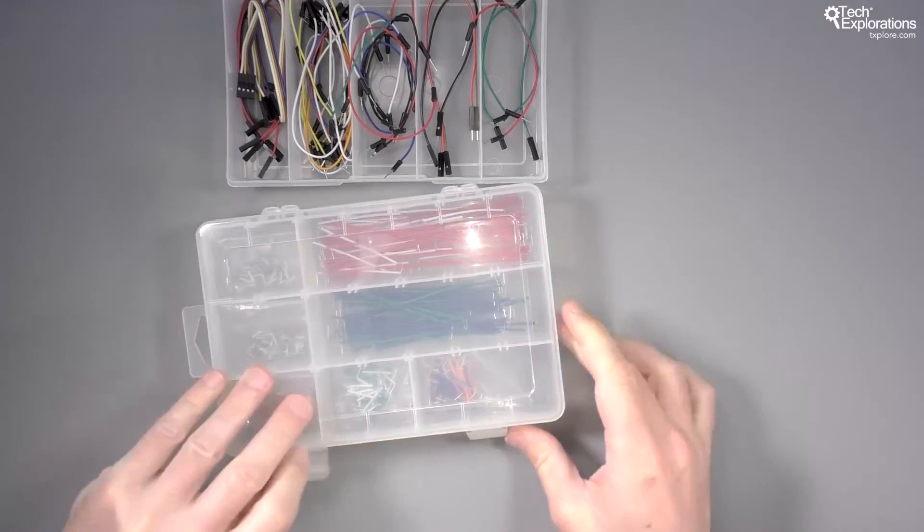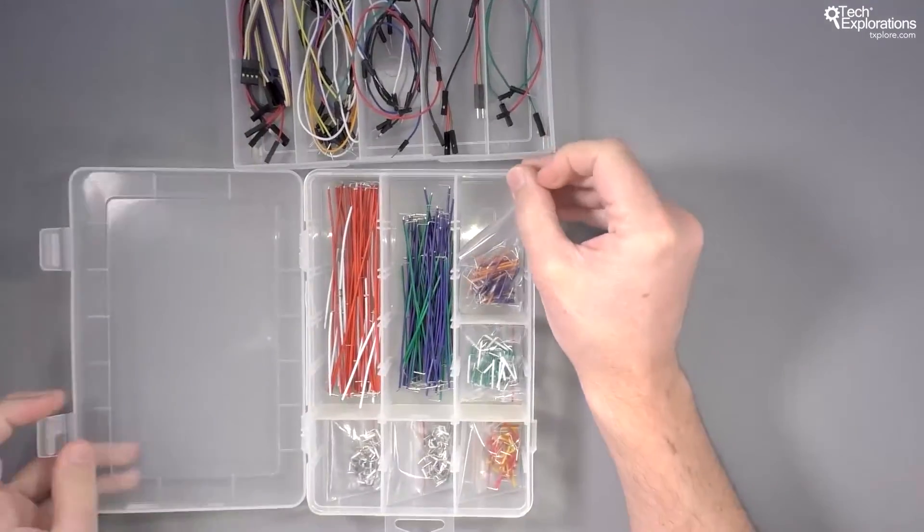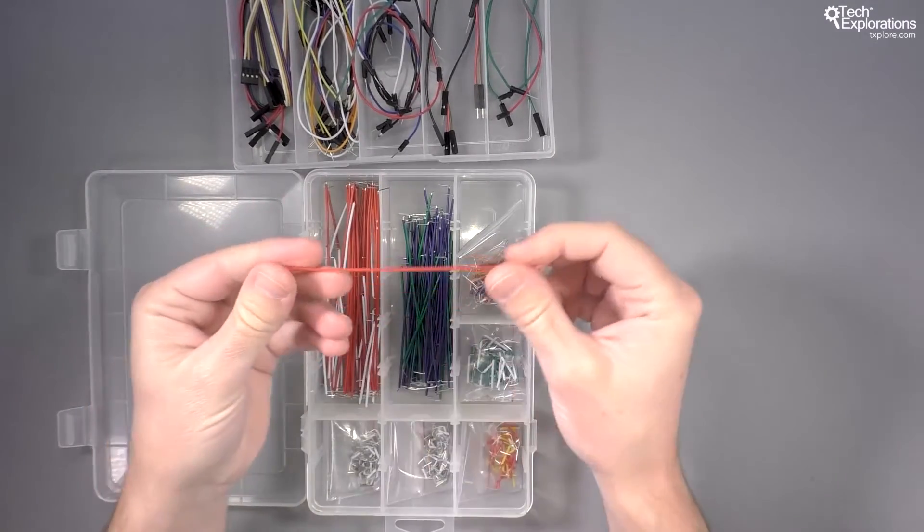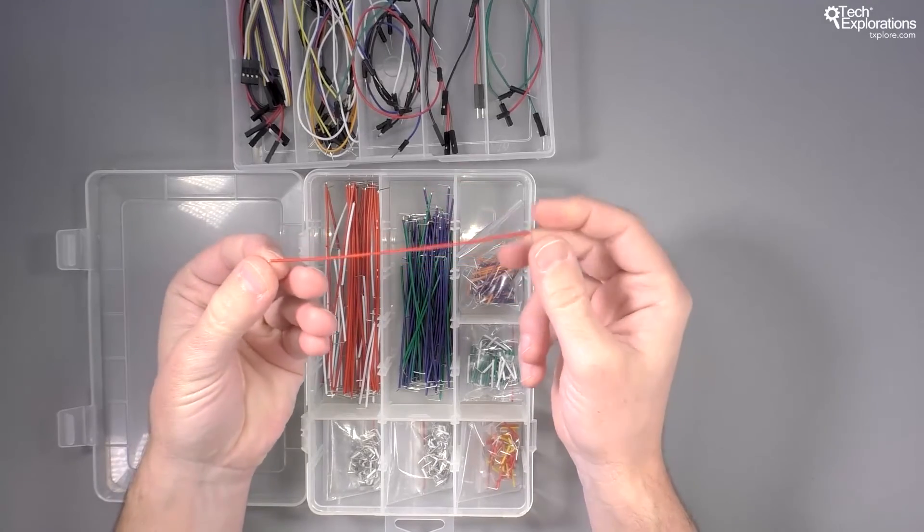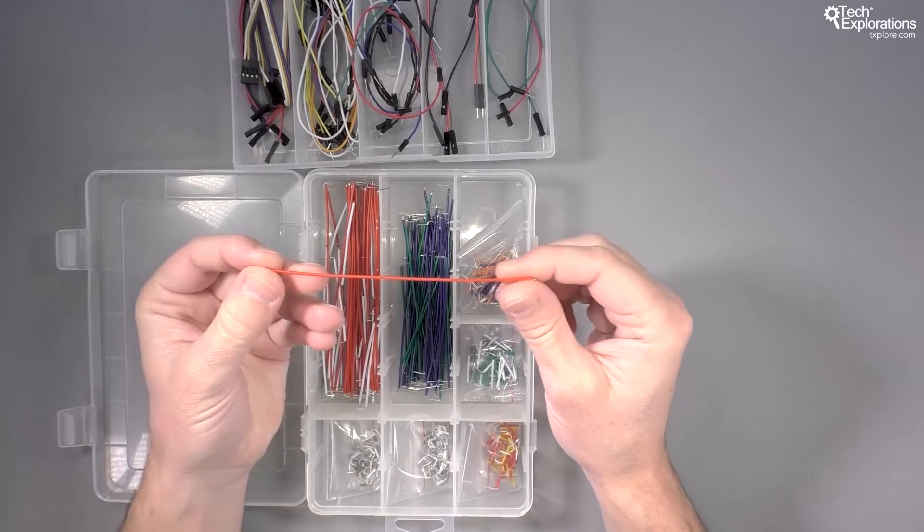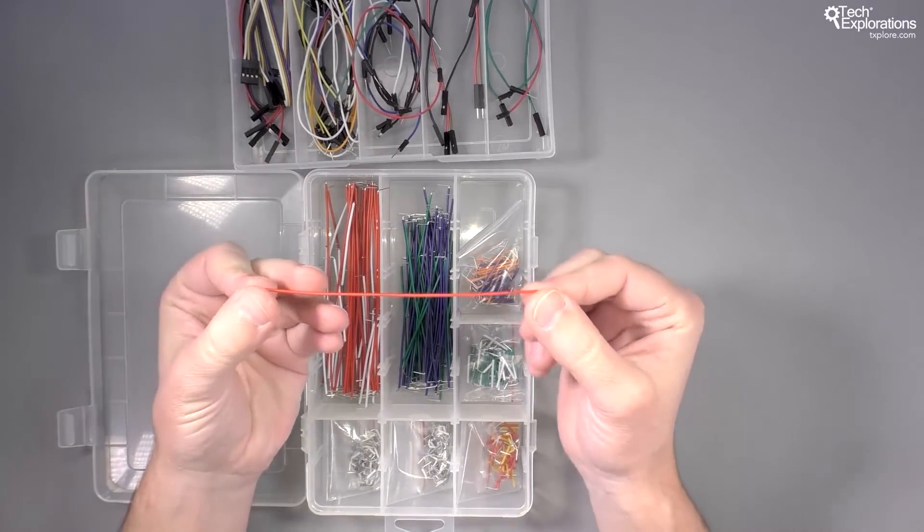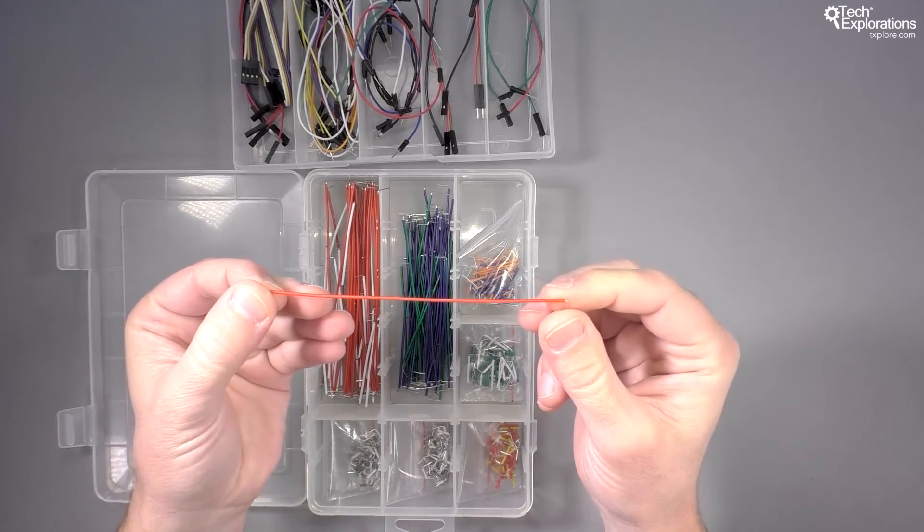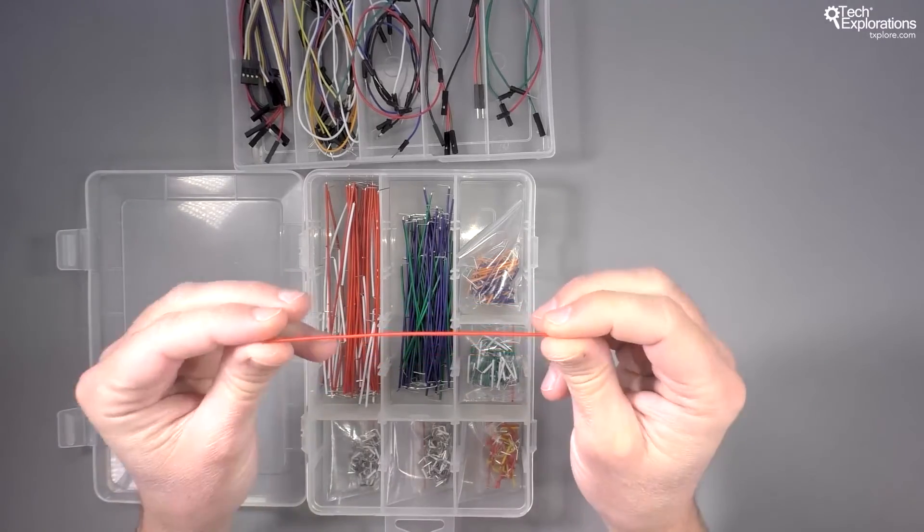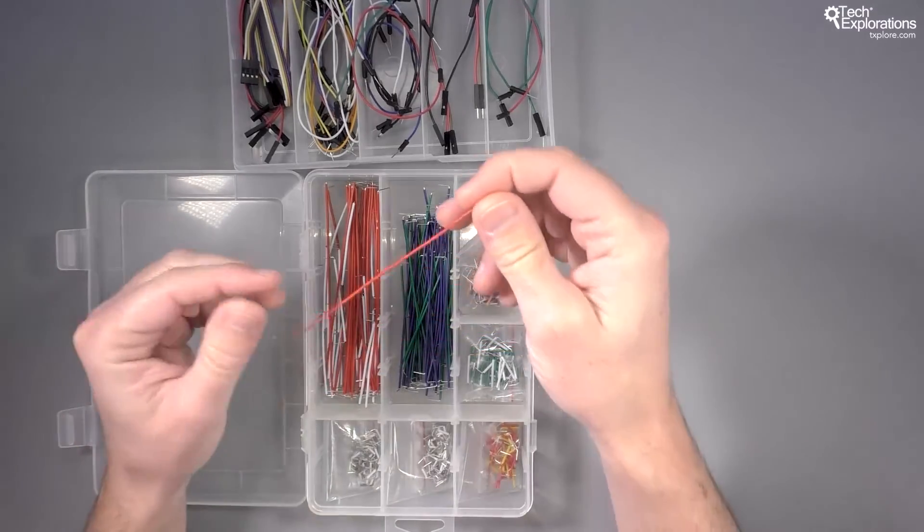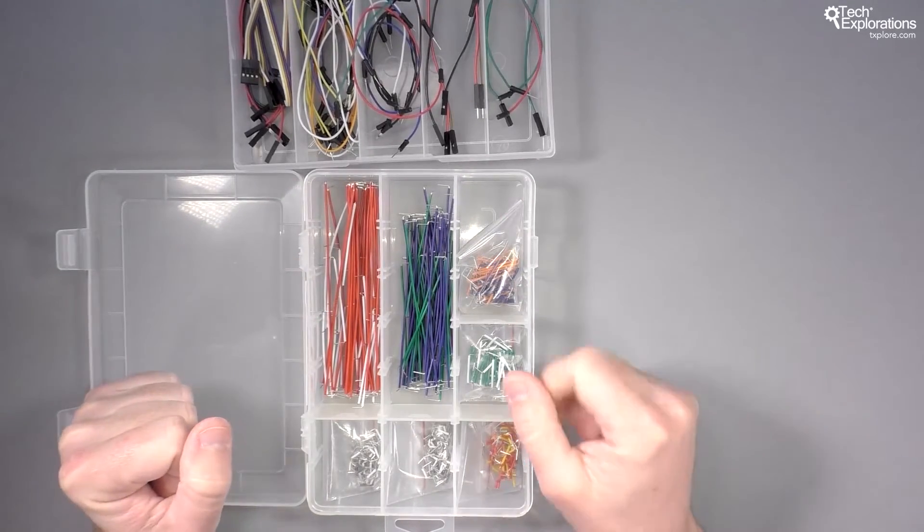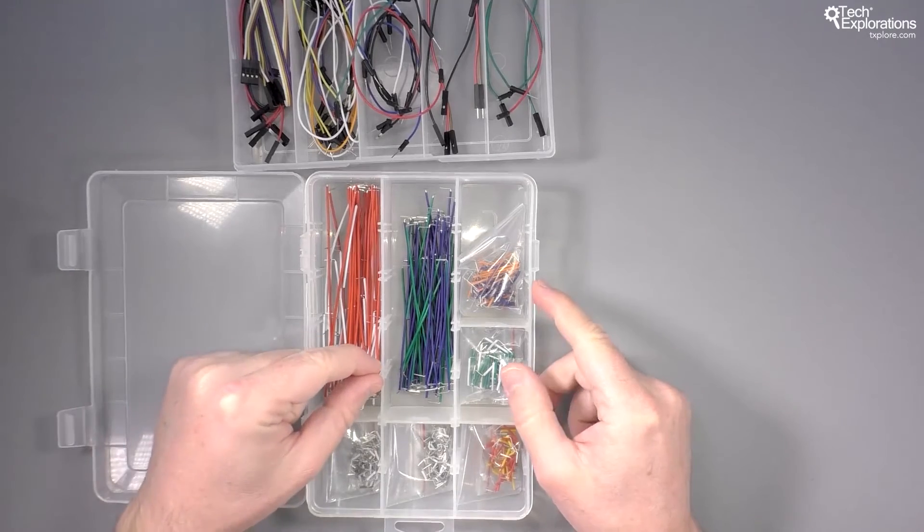Solid core jumper wires like these. The nice thing about these on the breadboard is that it just makes it easier to show where a wire starts and where it ends because they're straight. So I'll be making more use of these solid jumper wires. They're still flexible but I'll be keeping them straight so that you can see what the connections are.